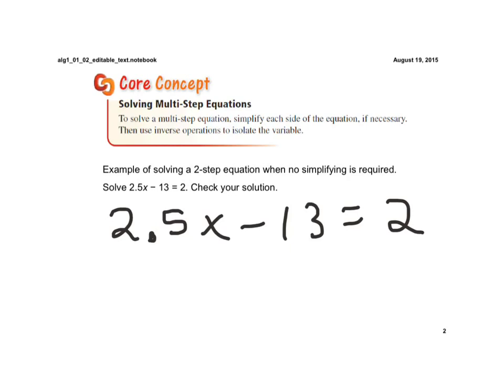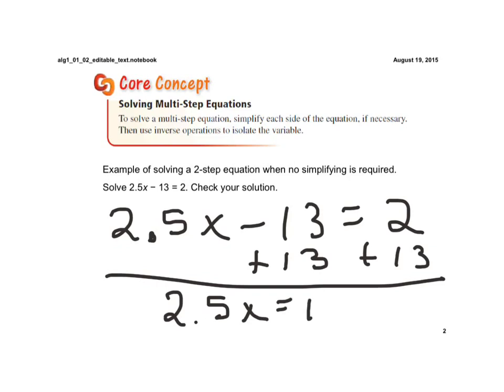So to solve this, we're going to use inverse operations. To get x by itself, we first have to get rid of what's being subtracted from that term. So we're going to add 13 to both sides. Now we have 2.5x is equal to 15.